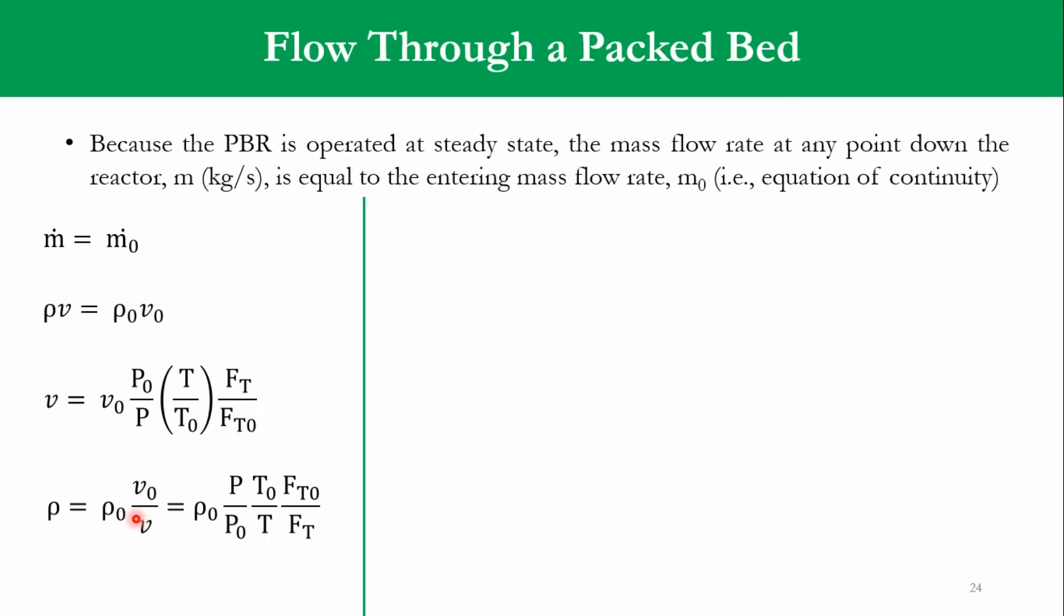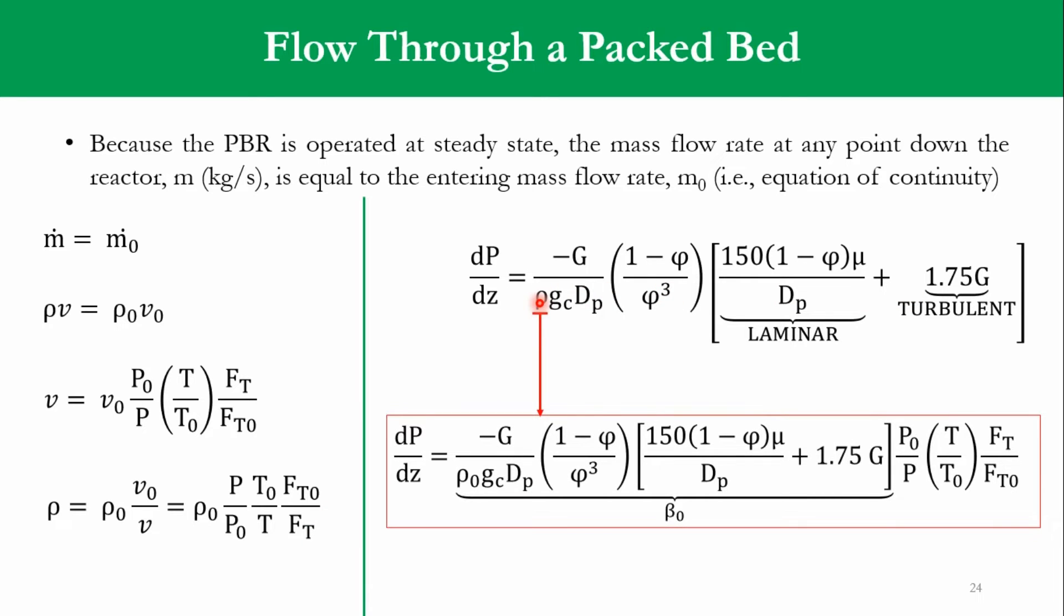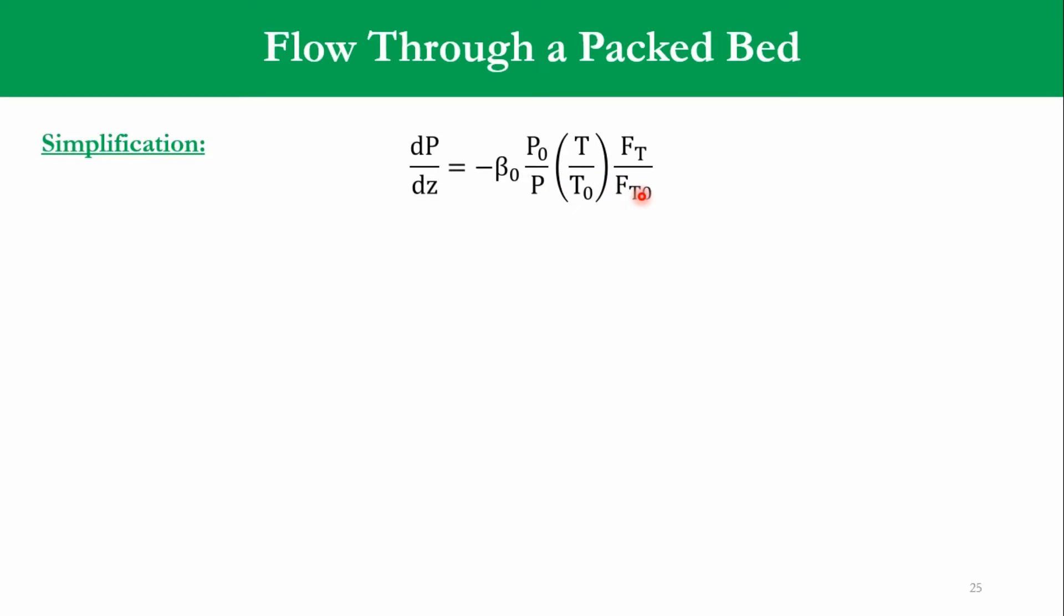Once we use these two equations to represent it, ρ is equal to ρ0 V0 over V, and accordingly substituting the value of V over here, V0 is cancelled. We get ρ is equal to ρ0 P over P0, this whole term is reversed, P over P0, T0 over T, FT0 over FT. Now coming to this equation, we know the answer of ρ. Substituting the value, this whole equation has been transformed. Once you substitute the value of ρ, which is this one, ρ0 P over P0 T0 over T FT0 over FT, this will reverse. You can see P0 over P, T over T0, FT over FT0, and this is represented over here in the same way as well.